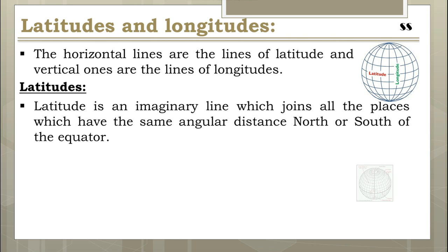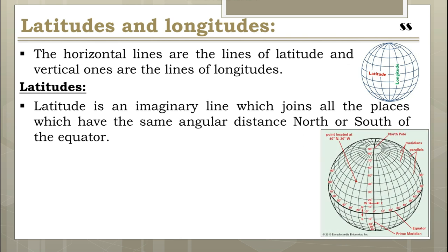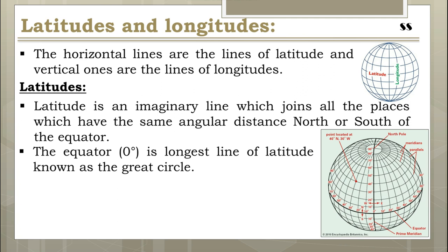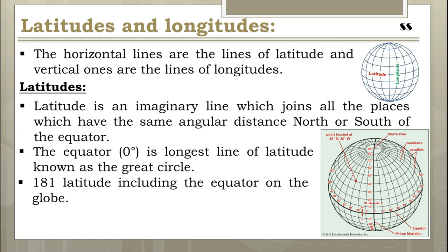Latitude is an imaginary line which joins all the places that have the same angular distance north or south of the equator. It is measured in degrees. The equator, at zero degrees, is the longest line of latitude and is also known as the great circle. This line divides the Earth into two equal halves — the northern hemisphere and southern hemisphere — and is equal to the circumference of the Earth. The length of lines of latitude decreases with distance from the equator. All lines of latitude are circles parallel to the equator, so they are called parallels of latitude. There are 90 degrees of latitude on each side of the equator; including the equator, there are totally 181 latitudes.